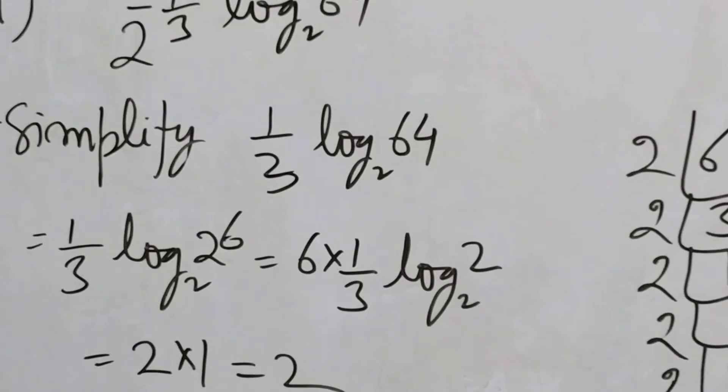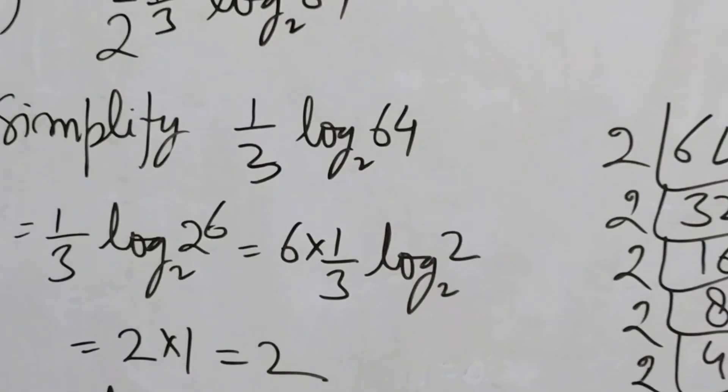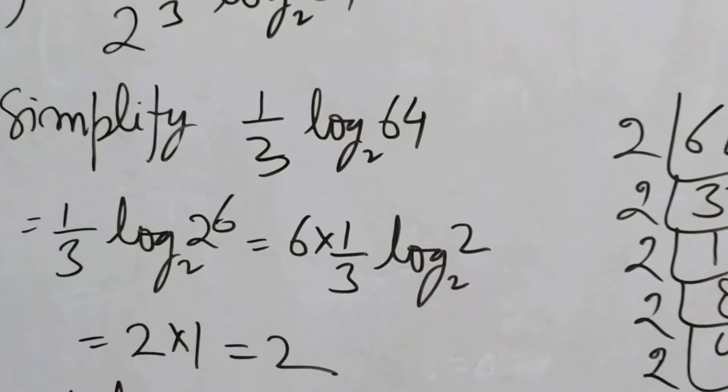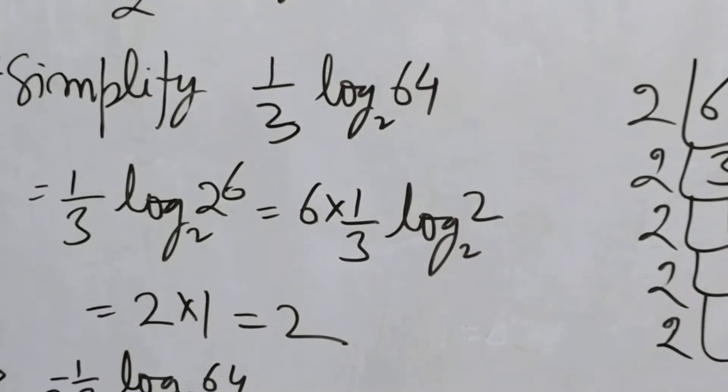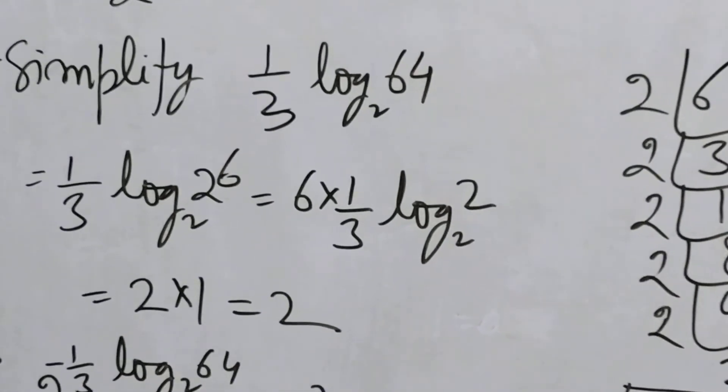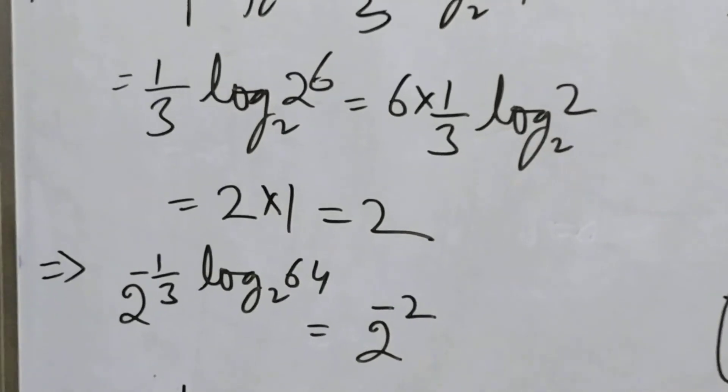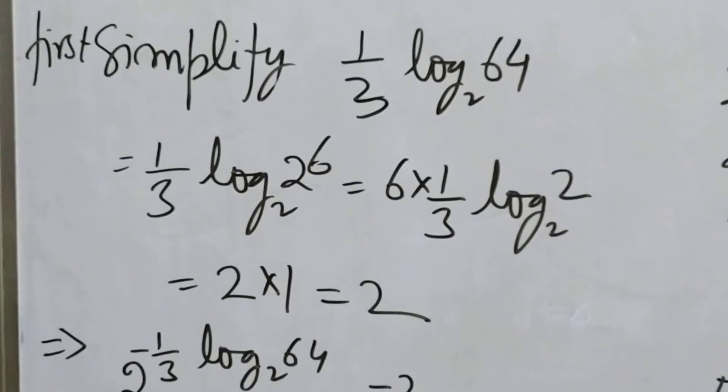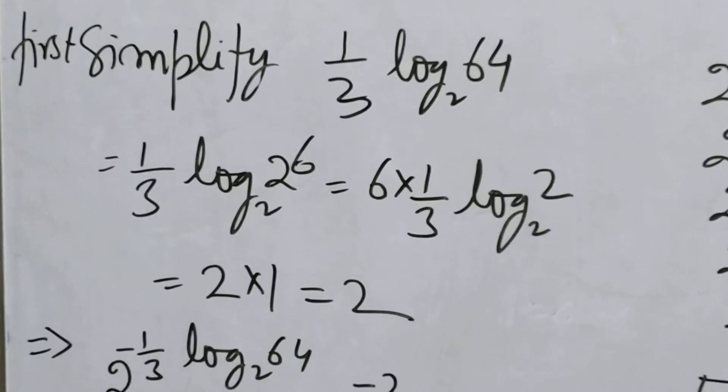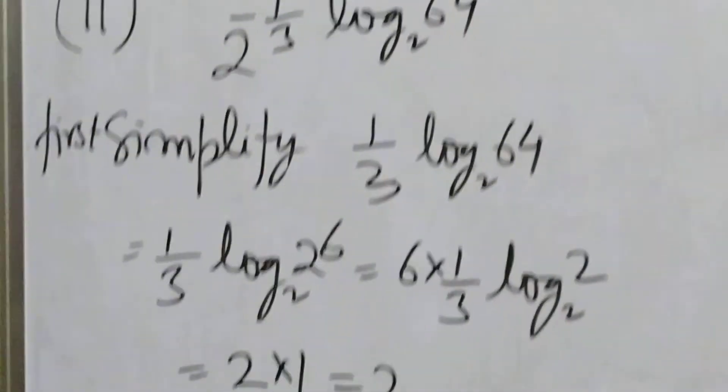This gives log of 2 to the base 2. As you know that log of 2 to the base 2 is 1. So 6 times 1 by 3 times 1, that's 2 into 1 is 2. That's the answer.